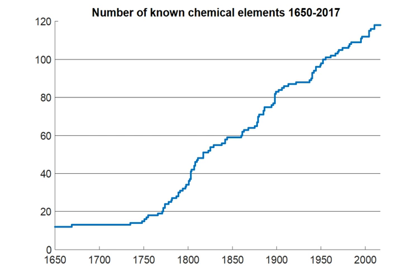The discovery of the 118 chemical elements known to exist as of 2018 is presented in chronological order. The elements are listed generally in the order in which each was first defined as the pure element, as the exact date of discovery of most elements cannot be accurately determined.